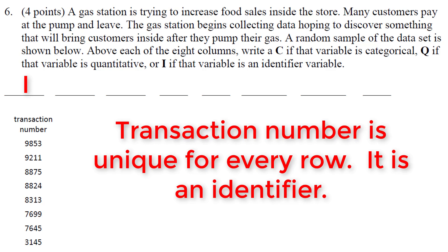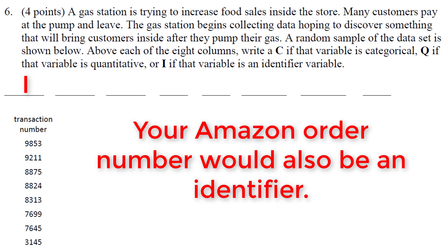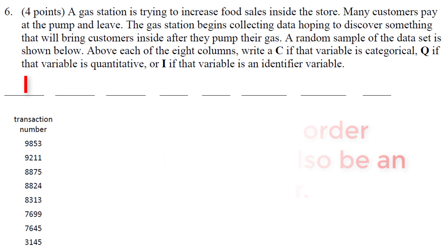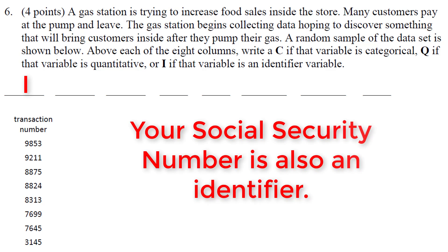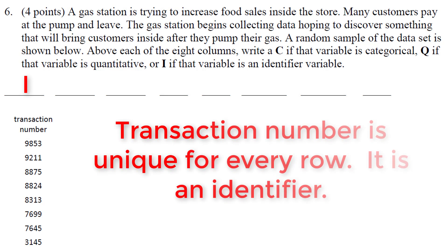No one should have the same transaction ID. It's the same philosophy as calling up Amazon and giving them your order number. If you gave Amazon order number 5,286,481, they would be able to pull up the exact transaction. It's the same thing as your social security number — if someone gives you their social security number, it would be a unique number that identifies them. Remember: identifiers identify.